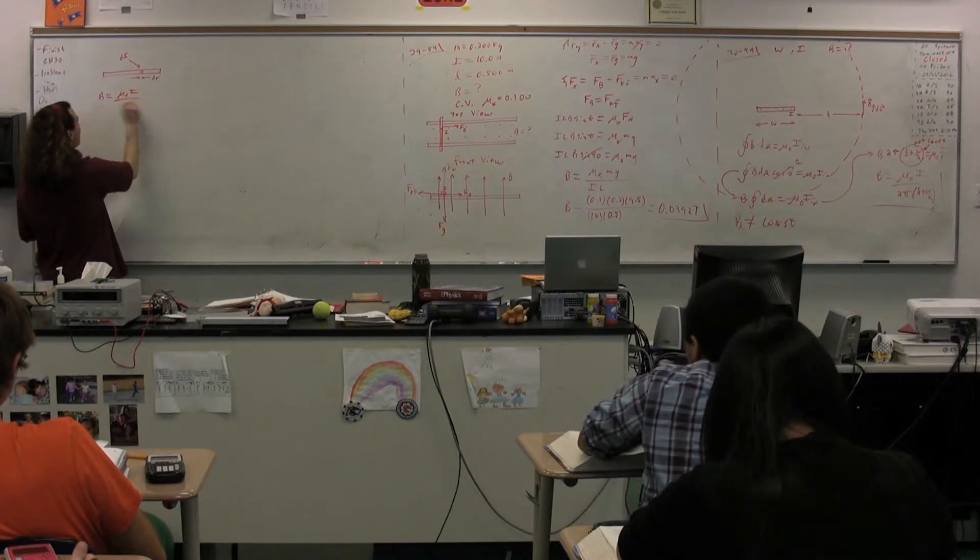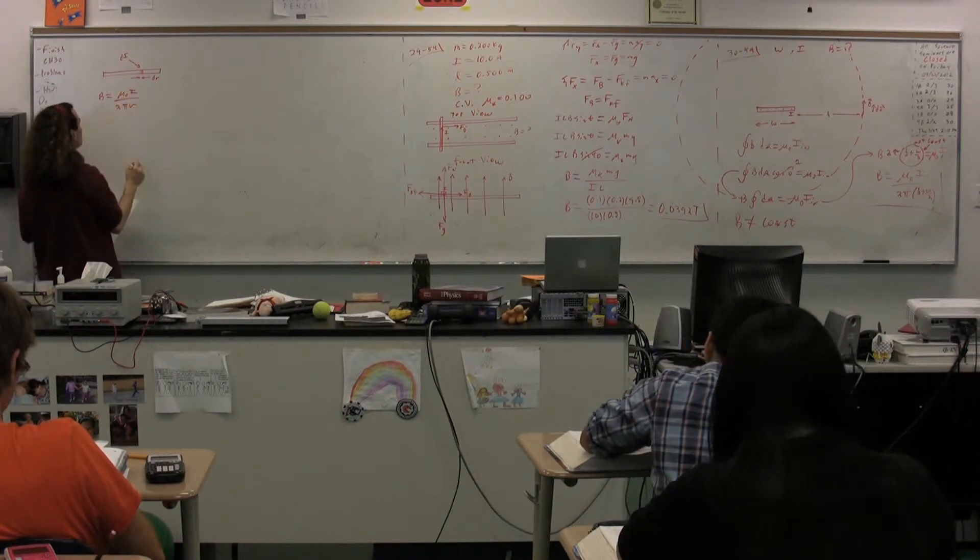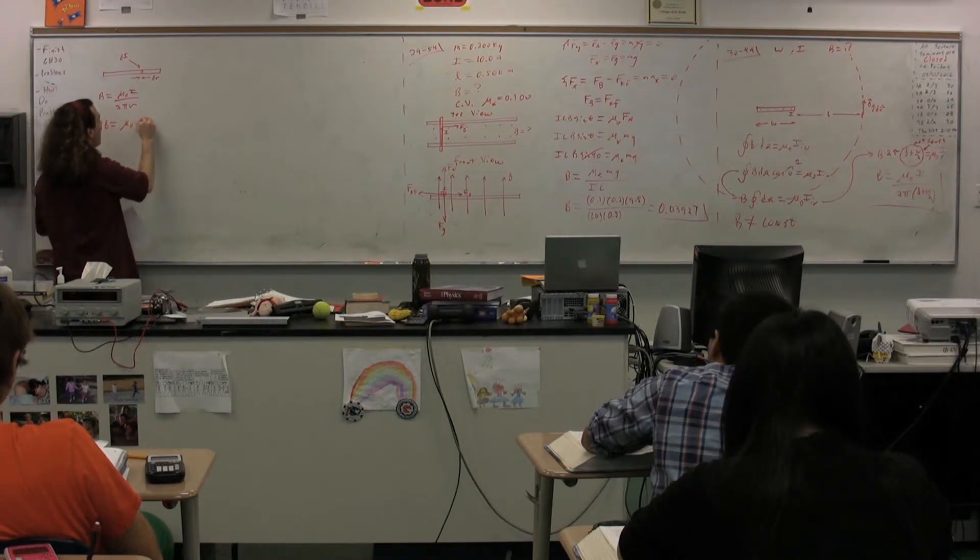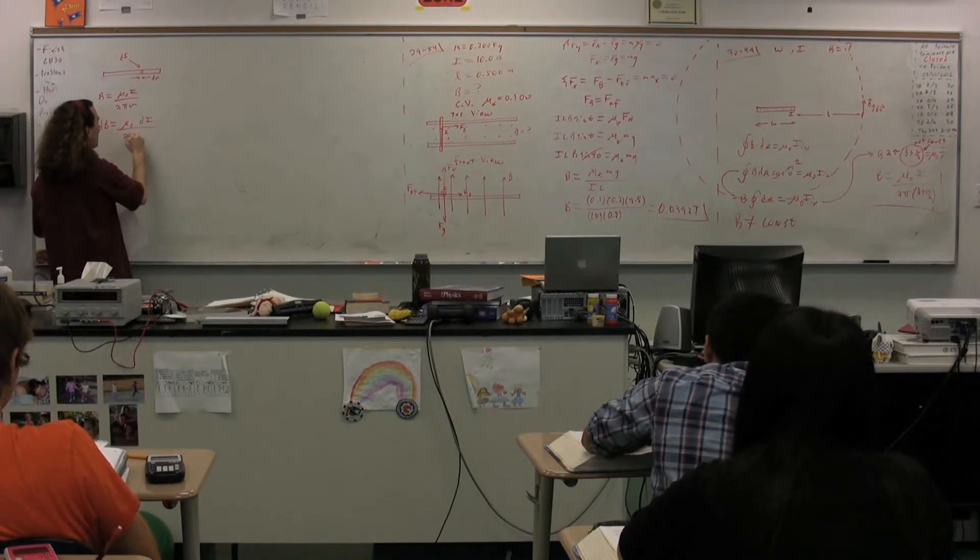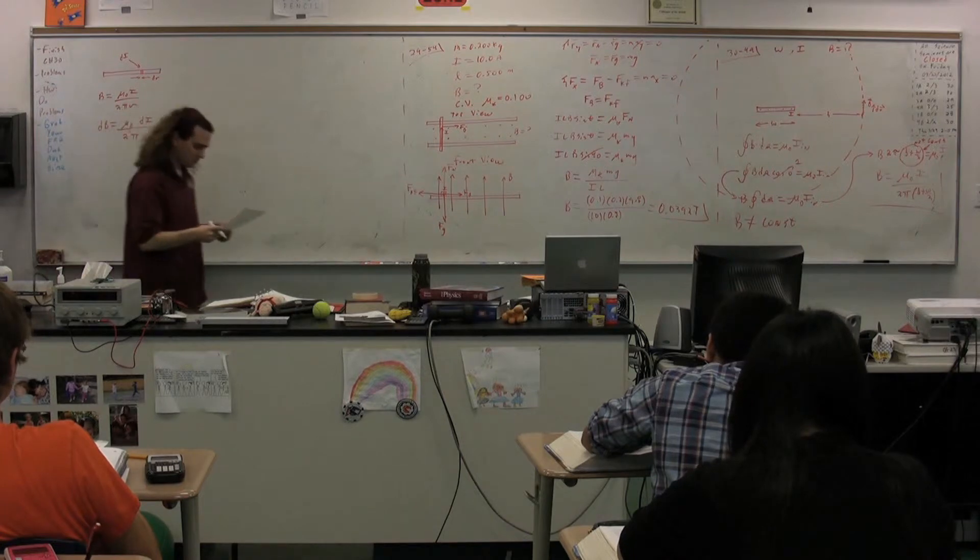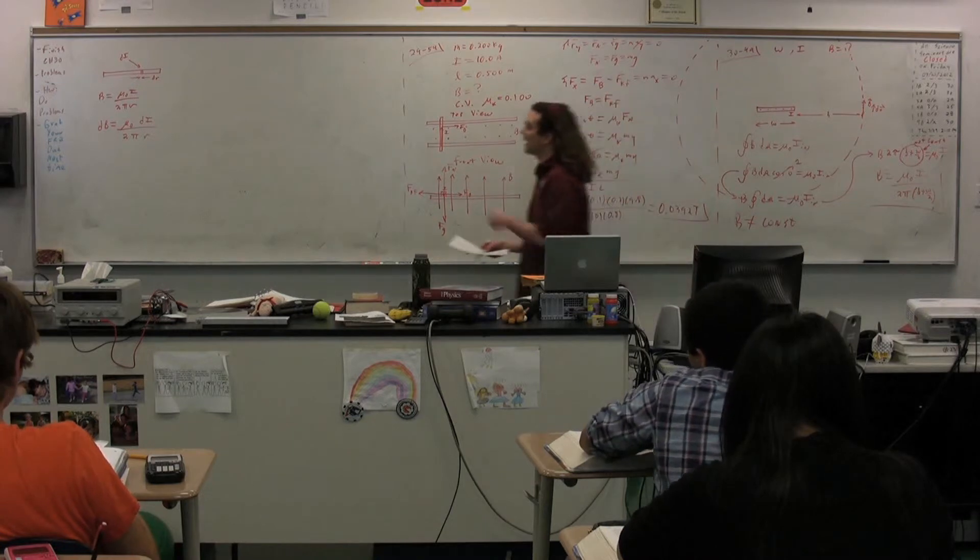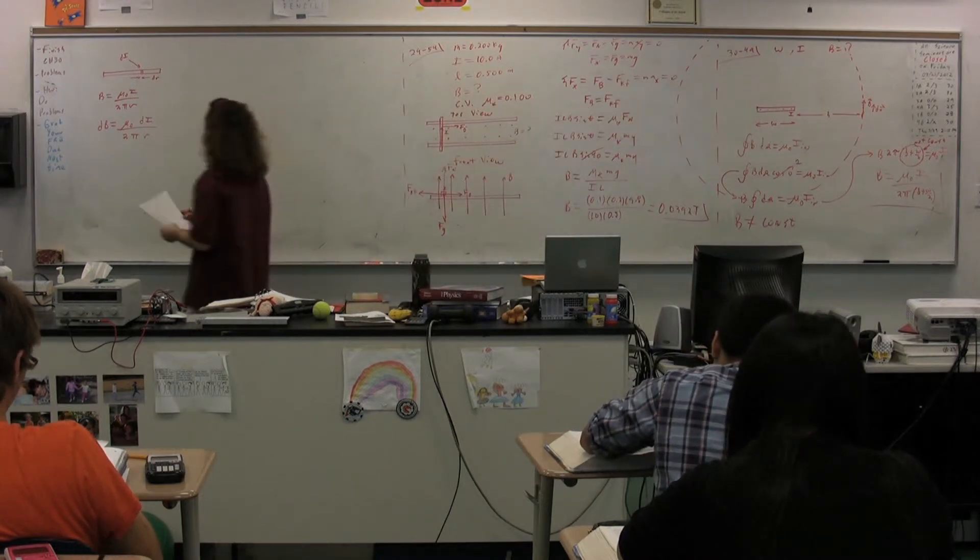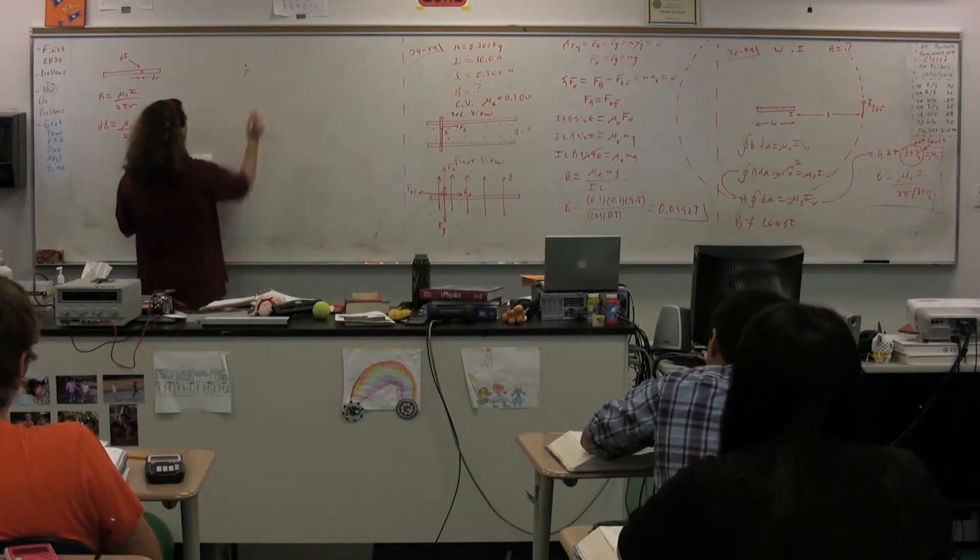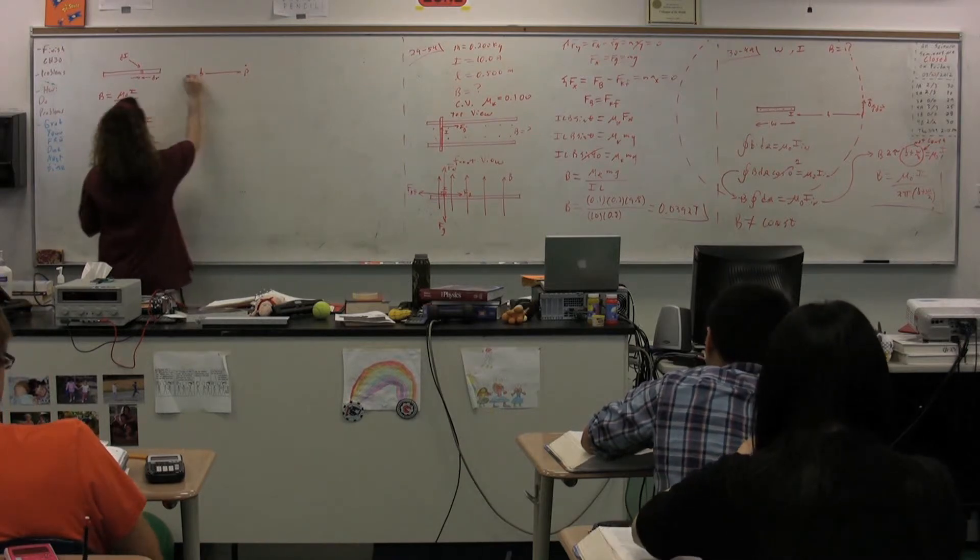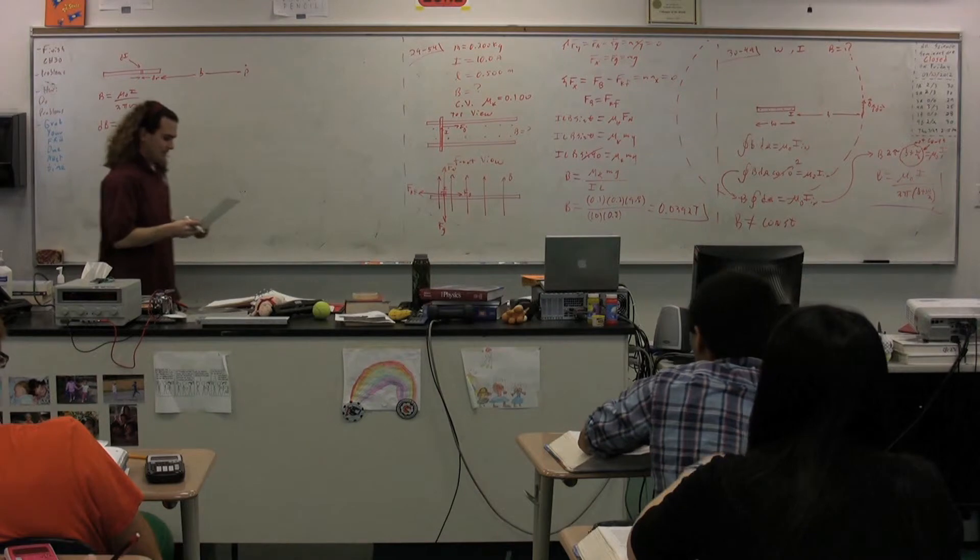And, we have already figured out that the magnetic field caused by a current carrying wire is equal to mu naught times a current divided by 2 pi r. So, dB is going to be equal to mu naught times Di divided by 2 pi r. Where r is the distance from Di to the point we're talking about, point P, all the way over here, which we've defined as B.